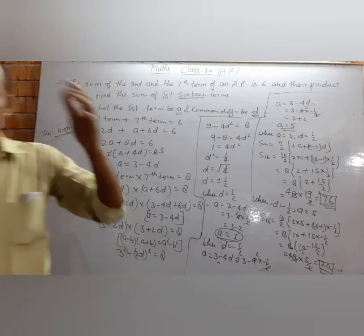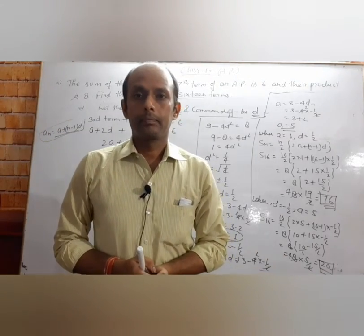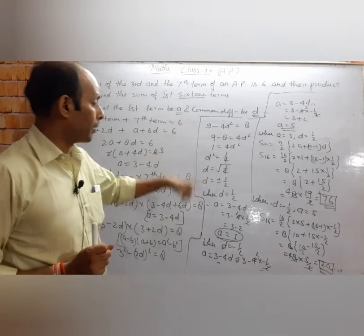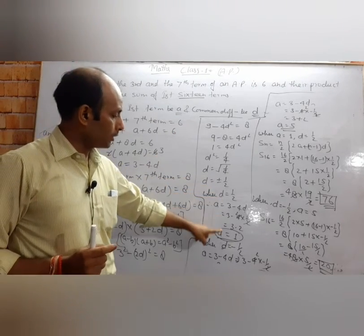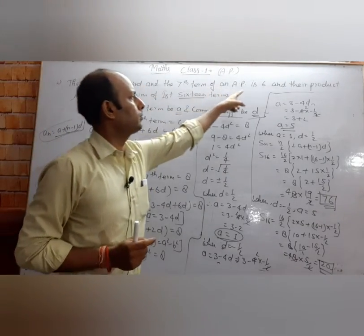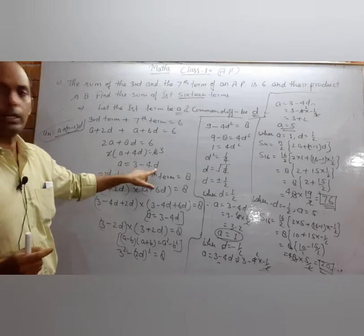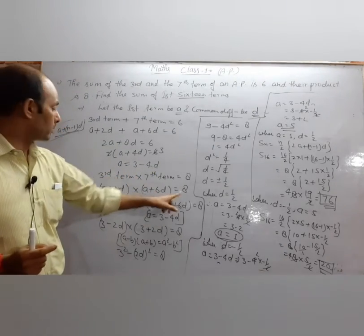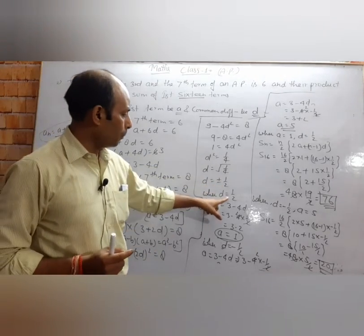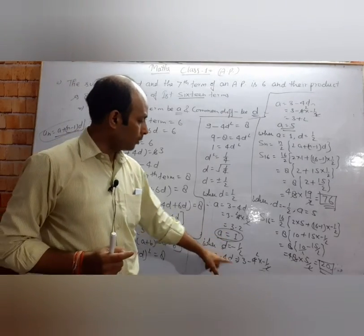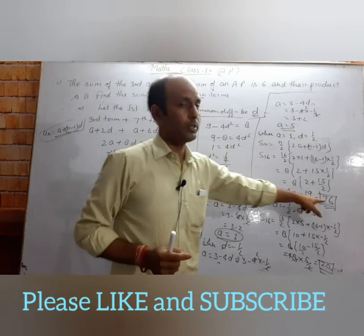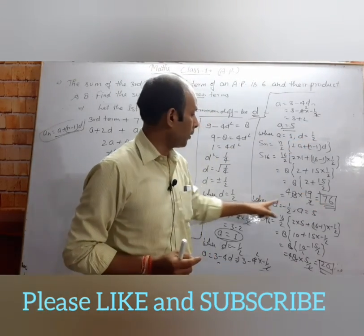Your concept must be clear. We take both values because the question does not specify to take only positive values. When d is 1/2, a is 1 and the sum is 76. When d is minus 1/2, a is 5 and the sum is 20. Both answers are valid.